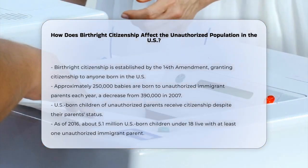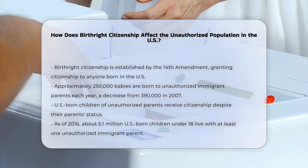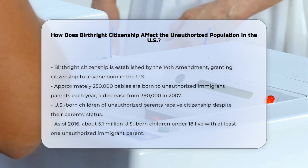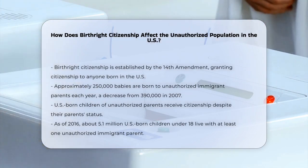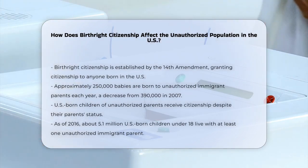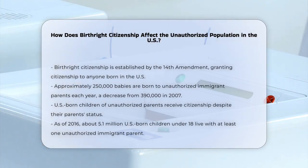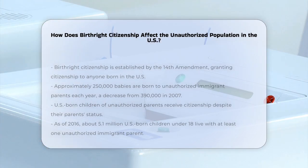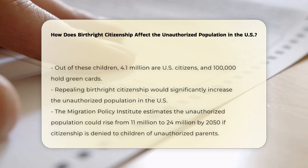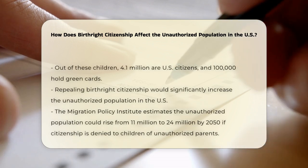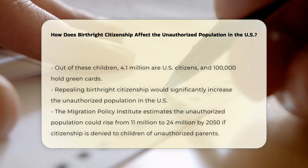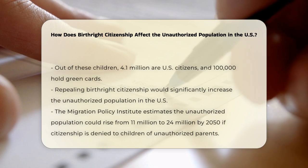As of 2016, there were approximately 5.1 million U.S.-born children under the age of 18 living with at least one unauthorized immigrant parent. Of these, 4.1 million have U.S. citizenship, and another 100,000 hold a green card.